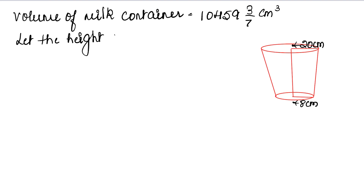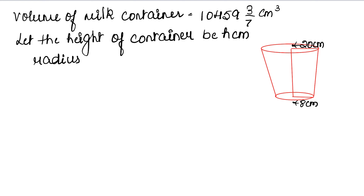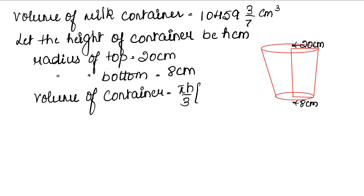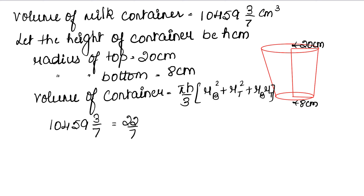Let the height of the container be h cm. Radius of top = 20 cm, radius of bottom = 8 cm. Volume का formula: Volume = π h/3 × (r_base² + r_top² + r_base × r_top). Volume कितना दे रखा है? 10459 और 3/7 = 22/7 × h/3, h हमें नहीं पता।